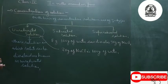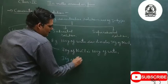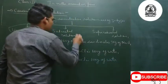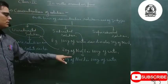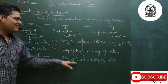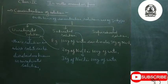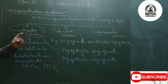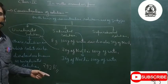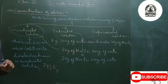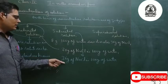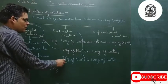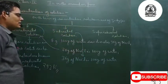Continuing with this example: if we add 36 grams of NaCl in 100 grams of water, it will form a saturated solution. Why? Because no more NaCl can be dissolved in this 100 grams of water. The condition is at 293 Kelvin — you cannot change the temperature. At 293 Kelvin, dissolving 36 grams of NaCl in 100 grams of water gives a saturated solution.